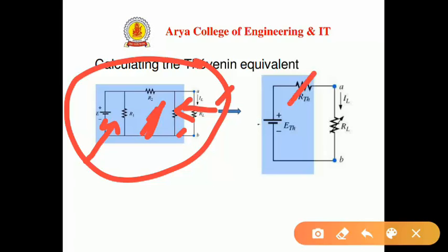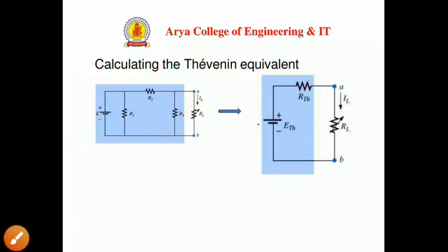The Thevenin voltage, Eth, is calculated as the open-circuit voltage across the load terminals. The original network is then replaced by this Thevenin equivalent circuit consisting of Rth in series with Eth, and this is the Thevenin equivalent circuit of the network.